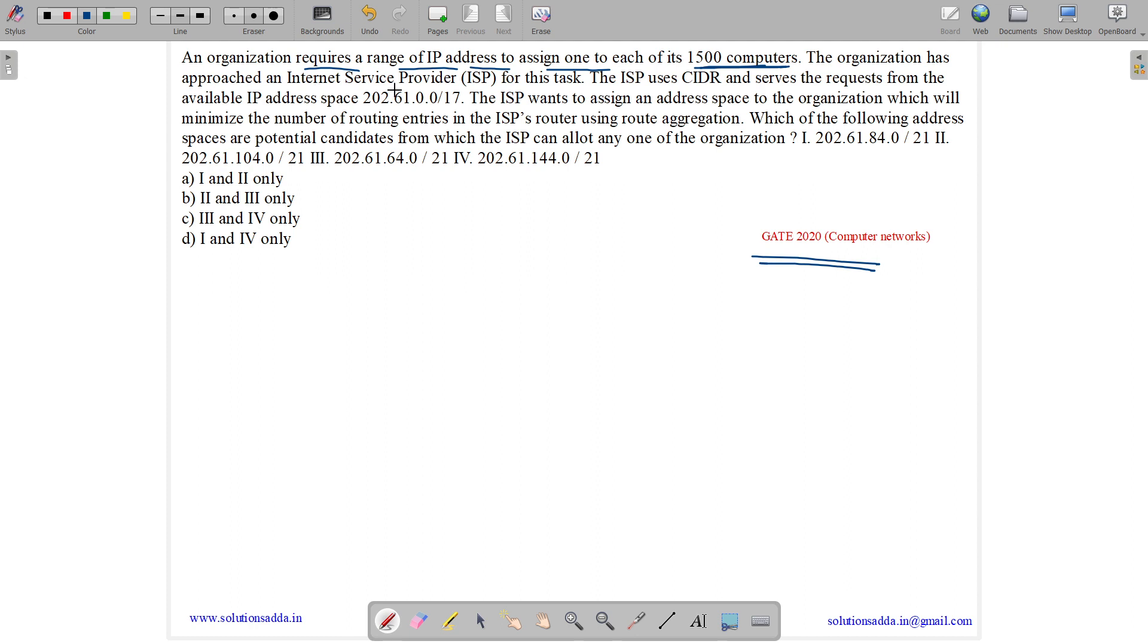The organization has approached an Internet Service Provider for this task. The ISP uses CIDR and serves the request from the available IP address space 202.61.0.0/17. The ISP wants to assign an address space to the organization which will minimize the number of routing entries in the ISP router using router aggregation, which means we are using subnetting.